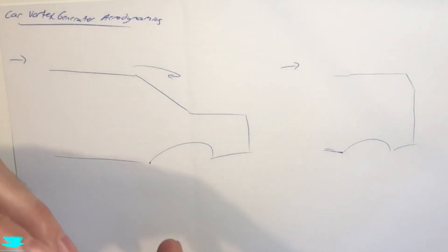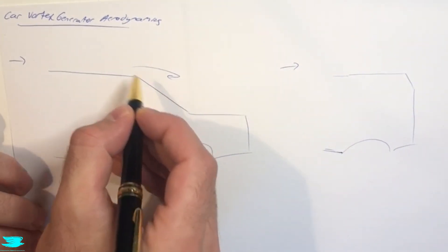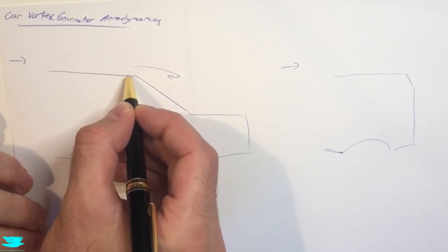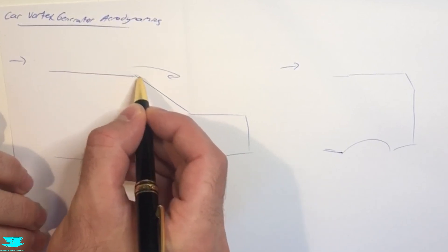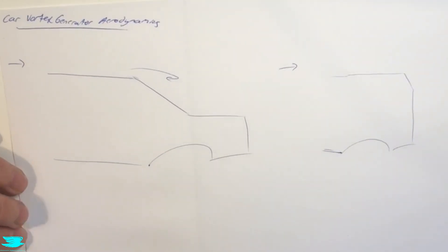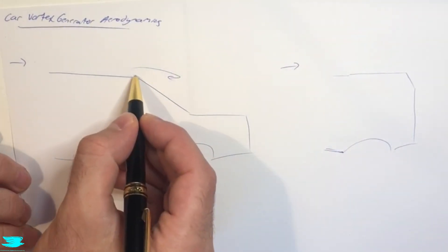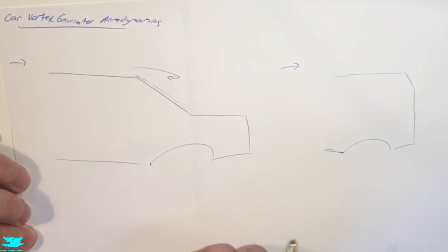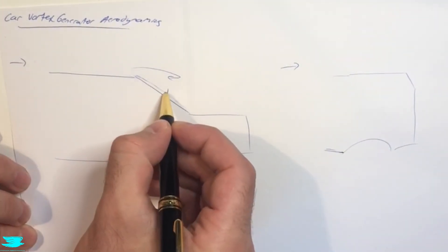Now the way that vortex generators work is a little more complicated than what they're generally given credit for. The idea is that we mix higher momentum fluid into the boundary layer here, so that this flow over this very sharp corner has a lot of energy so it can stay attached. Ideally, it will stay attached over the entire back window. As such, the pressure will actually increase.